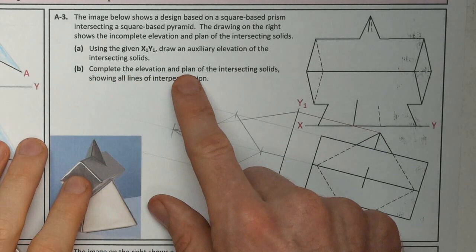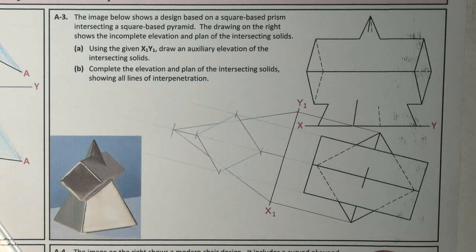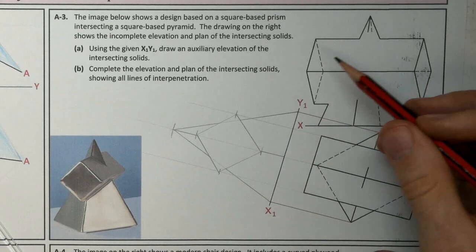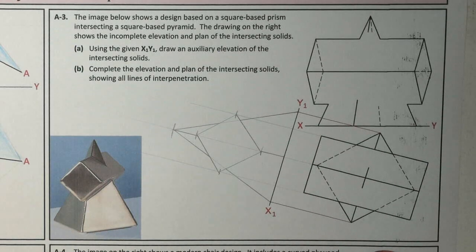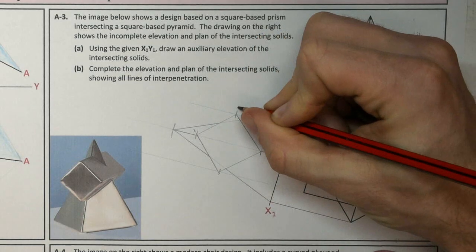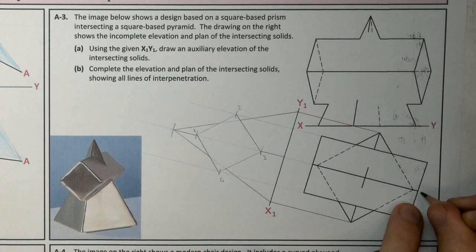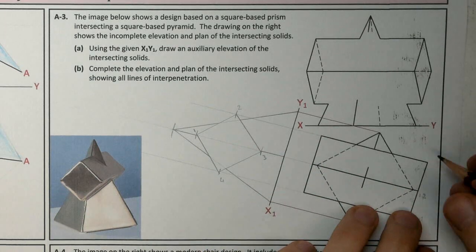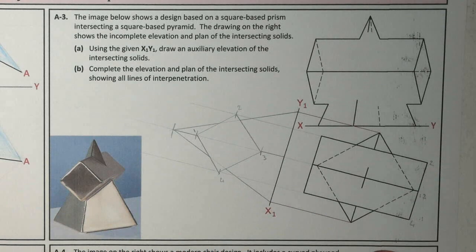Part B asks us to complete the elevation and plan of the intersecting solids showing all lines of interpenetration. We're going to use the points that we've obtained here in our auxiliary to inform that decision. I'm going to index my points. I'm going to call this edge one, edge two, edge three, and edge four. If we follow them back, this is edge one, two, three, and four. So that's one on the top, and three is on the underside.